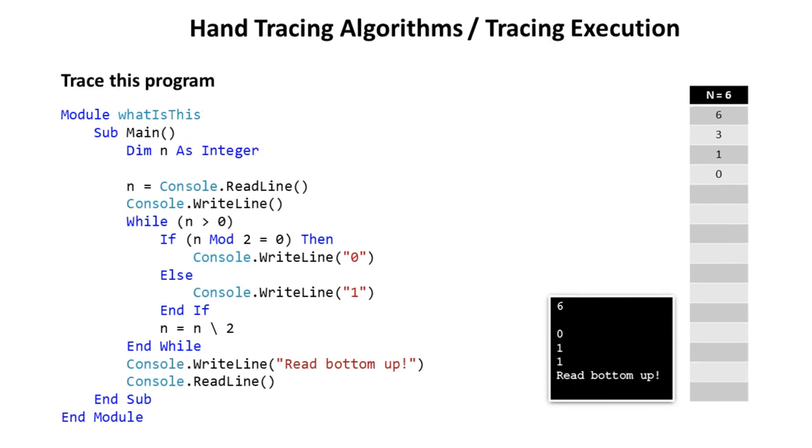So this is what you should have got. N should have been six, then three, then one, then zero. And this is the output you should have got. Can you work out what this program was doing? Well, if you read it from bottom up, one, one, zero is the binary for six. Try this program with other values for N and you'll see it works.